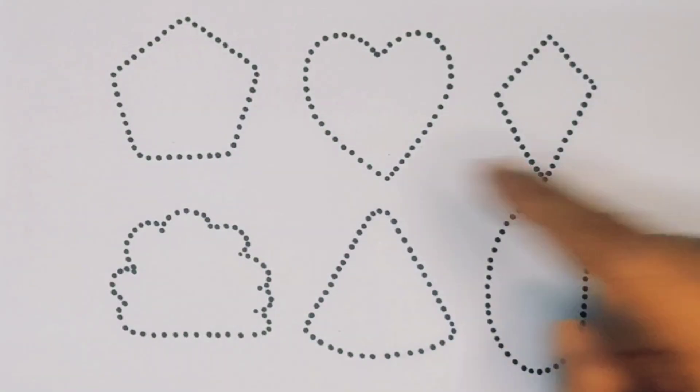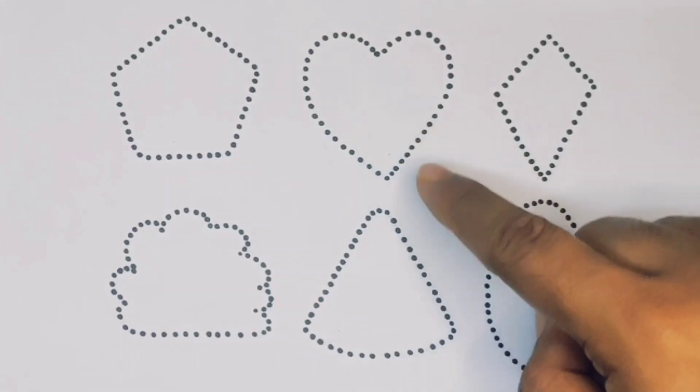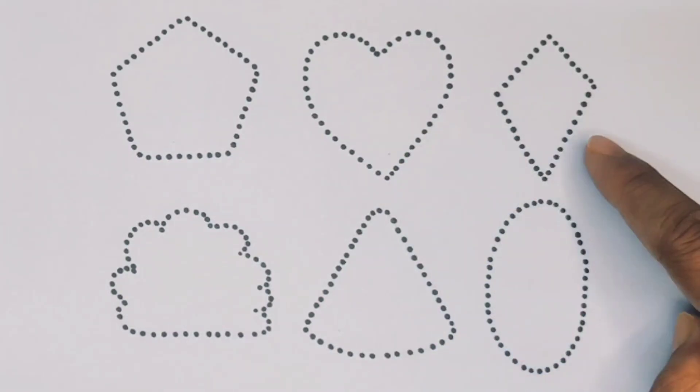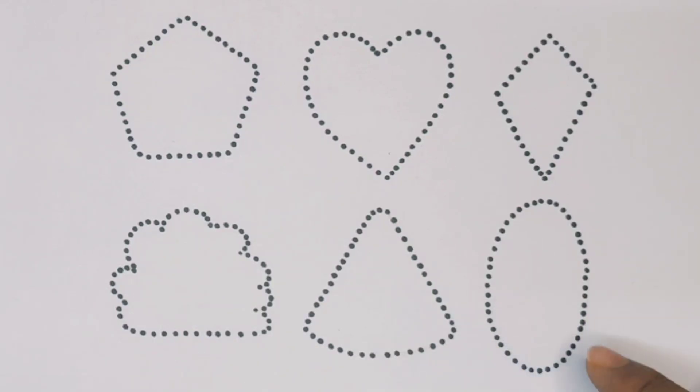Now let's learn the 2D shapes. Pentagon, Heart, Kite, Cloud, Triangle, and Oval.